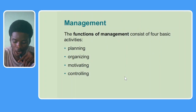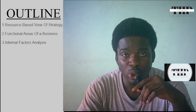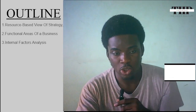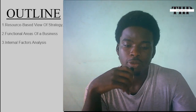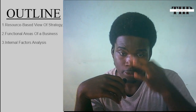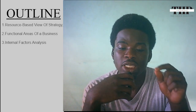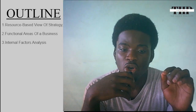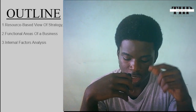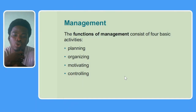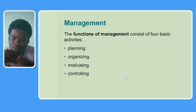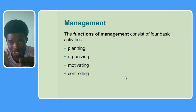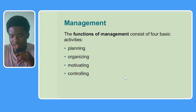From our outline, the second item is the functional areas of a business. Starting with management — the functions of management consist of four basic activities: planning, organizing, motivating, and controlling. This is covered more deeply in management videos, so you can check out the management playlist. If you're a business administration student, you should already be familiar with these. Management is a functional area in the business.